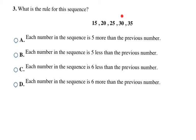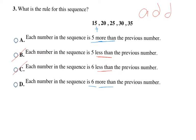Here we're just asked to find the rule for the sequence. I see 15, 20, 25, 30, 35 — it's increasing, so I'm looking for an addition rule. The answer choices with 'less than' mean subtraction, so it can't be B or C. 15 plus 5 is 20, 20 plus 5 is 25, 25 plus 5 is 30, and 30 plus 5 is 35. The rule is adding 5, the same as saying 5 more than the previous number — choice A.